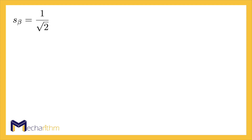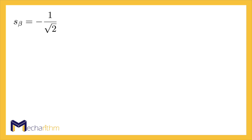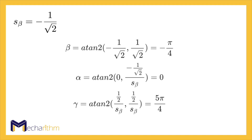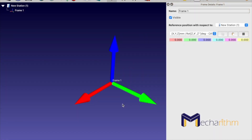Because we found two values for sine beta, we have two cases. If sine beta is equal to one over the square root of two, then beta is equal to 45 degrees, alpha is equal to 180 degrees, and gamma is 45 degrees. On the other hand, if sine beta is equal to minus one over the square root of two, then beta is equal to minus 45 degrees, alpha is equal to zero degrees, and gamma is equal to 225 degrees. So both sets of ZXZ Euler angles — (180°, 45°, 45°) and (0°, −45°, 225°) — can represent the rotation matrix for the given orientation.